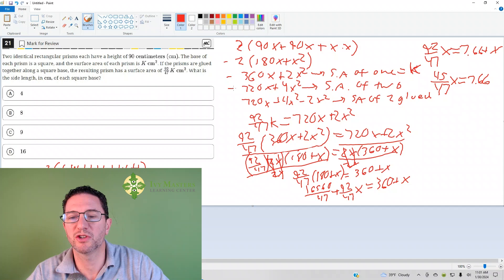Now, each square side has an area of x squared. So if you glued those two square bases together, you'd lose the surface area of each of those two square bases. So we'd have to subtract out that 2x squared. So we get 720x plus 4x squared minus 2x squared, the surface area of the two prisms once they're glued. And then when you do the 4x squared minus 2x squared, you get 2x squared.